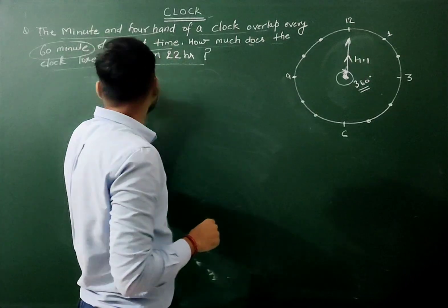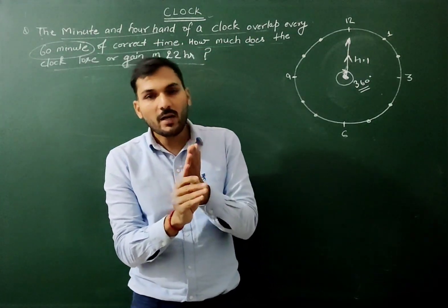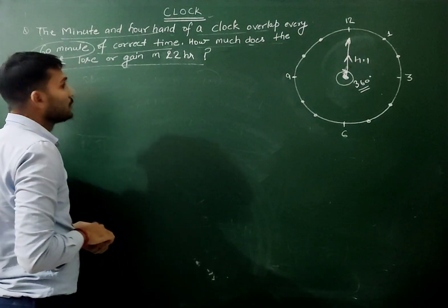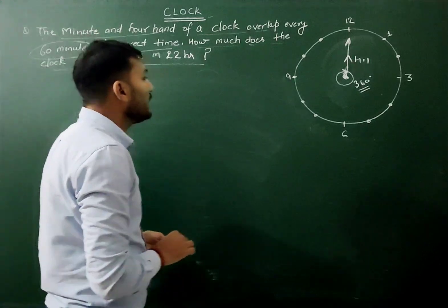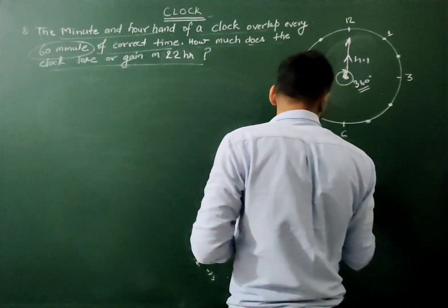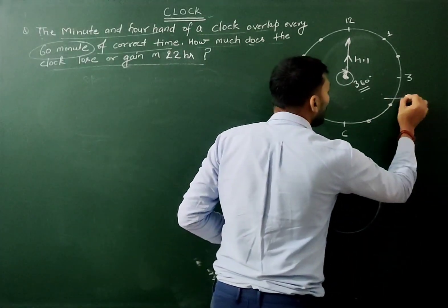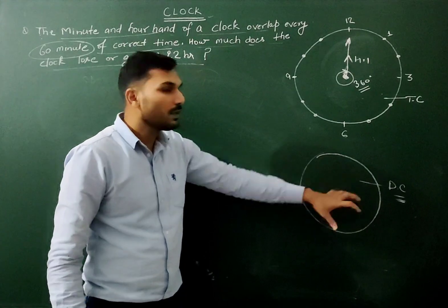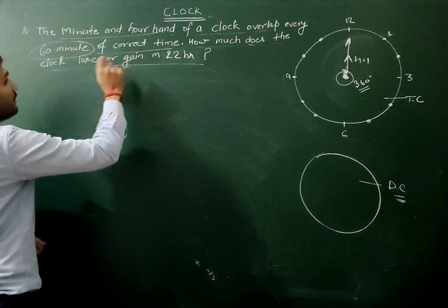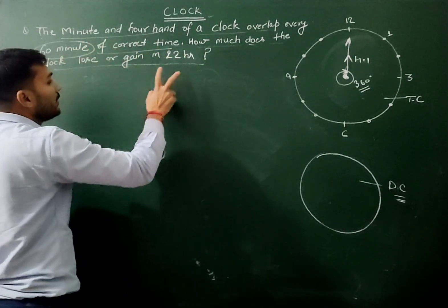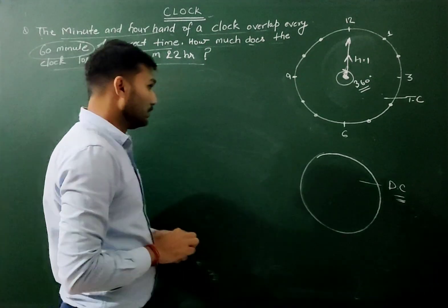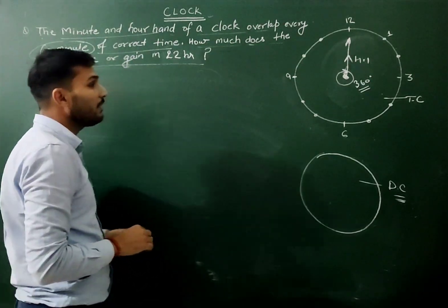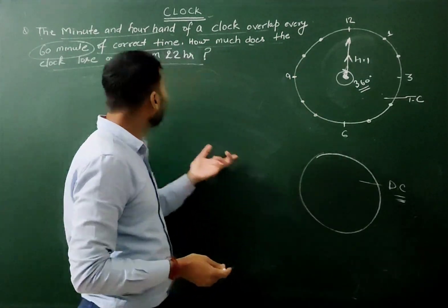In 22 hours, the hour hand and minute hand coincide — does the clock make a gain or a loss? To answer this, we need to compare a true clock and a defective clock. The defective clock is the one that makes coincidence after every 60 minutes. We need to know how much time each coincidence takes in a true watch and then compare it with the defective clock.